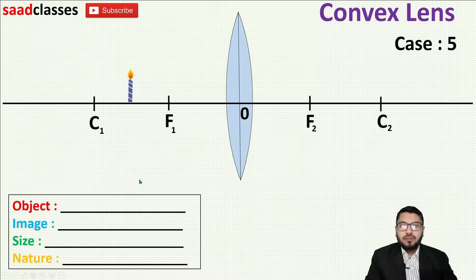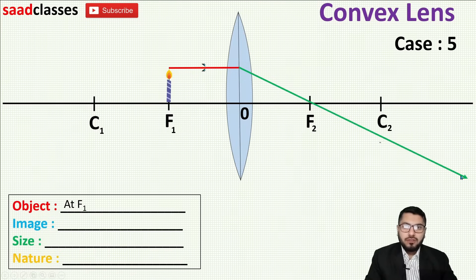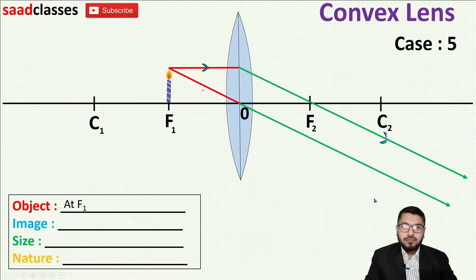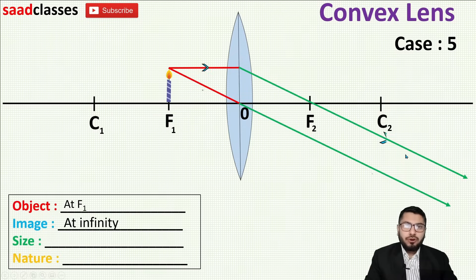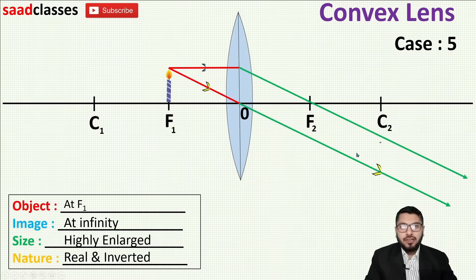In case number five, I bring my object to focus — F1. Applying the same rule: a ray parallel to the principal axis passes through F2 after refraction. I draw another ray through the optical center; it goes undeflected. Now these two rays are parallel, so they won't intersect. The image is formed at infinity because they are not going to meet, and the size will be highly enlarged. Since both are real rays, the image is real and inverted.